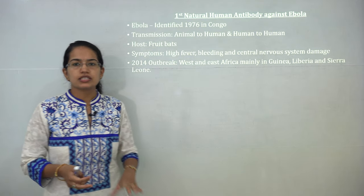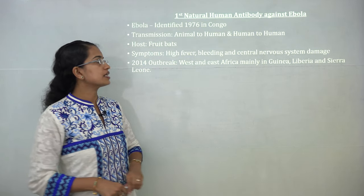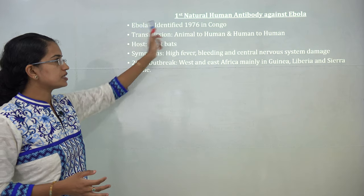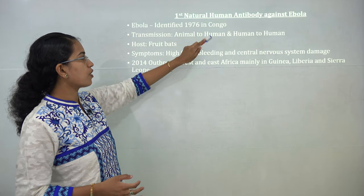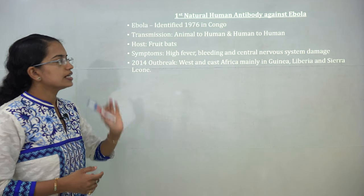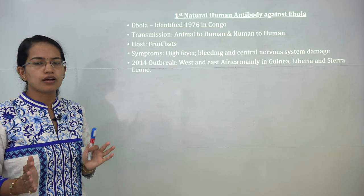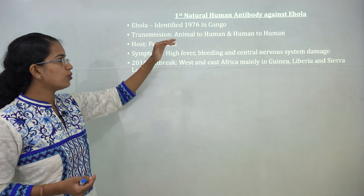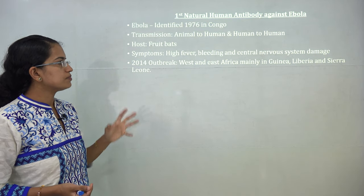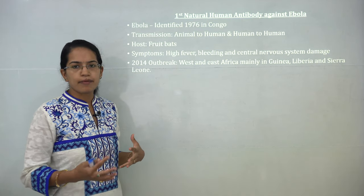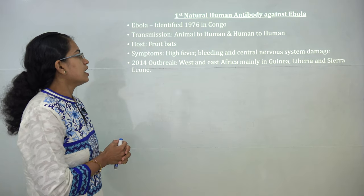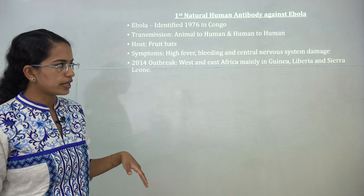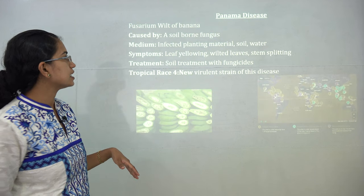The first natural human antibody against the Ebola virus has been prepared. Ebola was first identified in the forests of Congo in 1976. It is transmitted from animal to human and from human to human; its host is the fruit bat. Symptoms include high fever, bleeding, and damage to the central nervous system. In 2014, there was a severe outbreak in West Africa, mainly in Guinea, Liberia, and Sierra Leone.